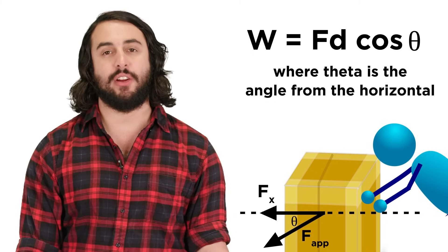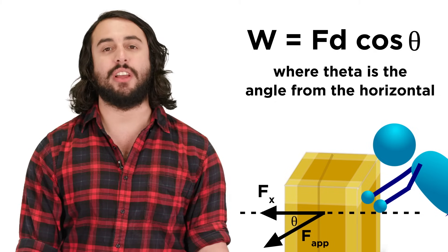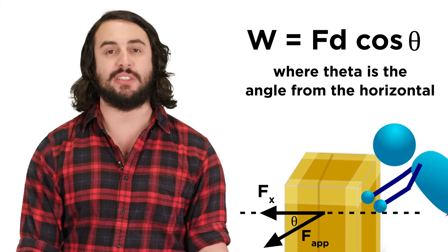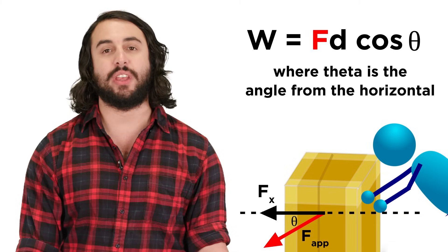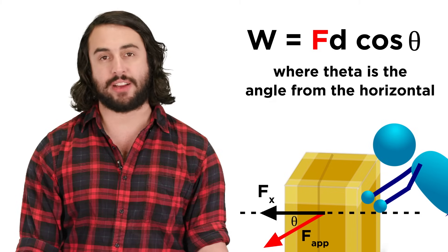In such a scenario, instead of using W = Fd, we could calculate the work done on the box using W = Fd cosine theta, as this will give us the portion of the applied force that is operating in the horizontal direction.